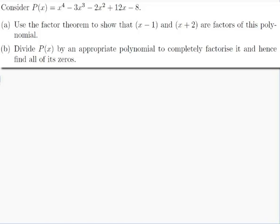So it says to use the factor theorem. What is the factor theorem? It says that if I substitute a number in and get 0, then x minus that number is a factor. And if I don't get 0, it's not a factor. So if I want to show that x minus 1 is a factor, I substitute in 1, and if I get 0 then x minus 1 is a factor.